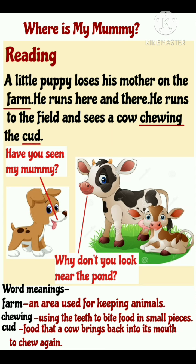Farm का मतलब है an area used for keeping animals — एक जगह जहाँ पर animals को रखा जाता है और पाला जाता है. Field का मतलब होता है मैदान. Chewing — using the teeth to bite food in small pieces — अपने दाँतों से खाने को चबाना. Cud — food that a cow brings back into its mouth to chew again — खाने को वापस अपने पेट से मुँह में लाना और फिर उसे अच्छे से चबाना.